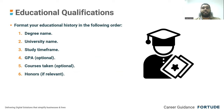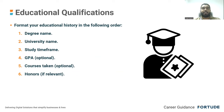For educational qualifications, mention the degree you followed, the university name, the study time frame — how long you did that degree — and GPA. The others are optional.